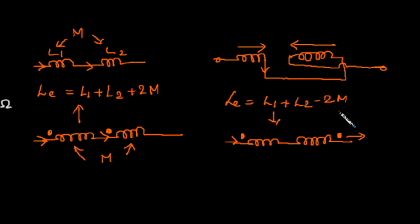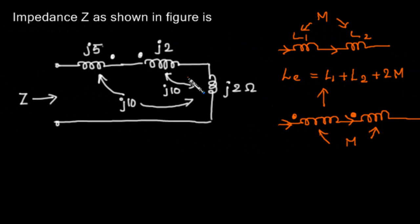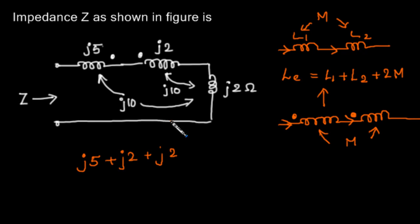This is the basic idea we need to solve this question. We are given impedances and the mutual inductance between them. We have j5, which is L1, and j2 as L2, and j2 as L3 — these three are in series, giving j5 plus j2 plus j2. Now let's check the dot terminals.